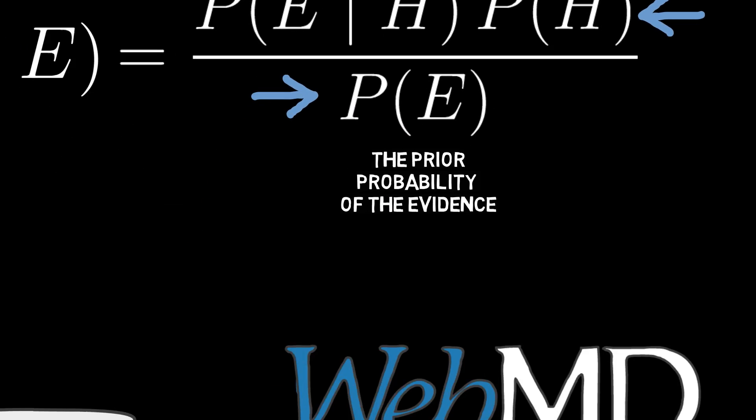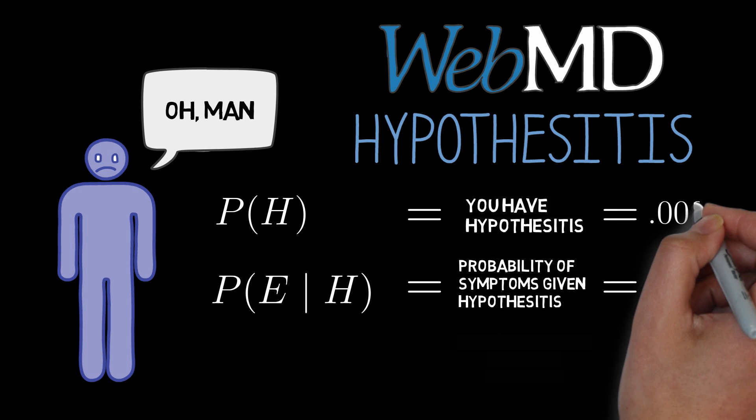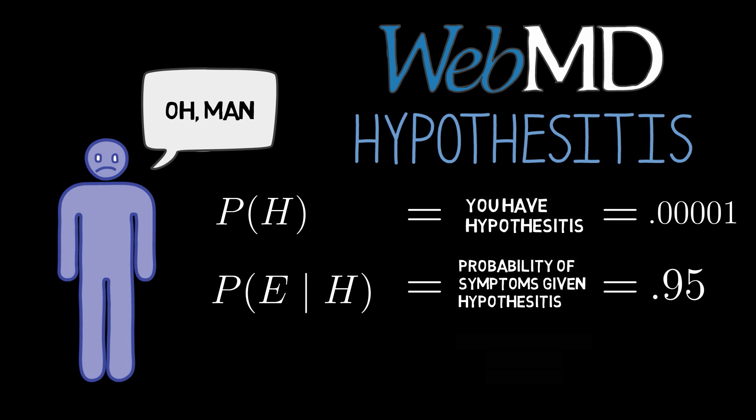With a little more googling, you discover that the disease is extremely rare. Only 1 in 100,000 people have it. So P of hypothesitis is 0.00001.